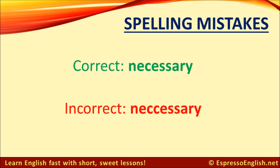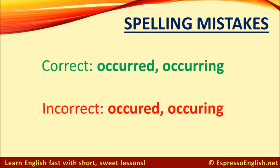Let's look at the word 'necessary' — we only need one C and two S's in the word 'necessary.' But in the words 'occurred' and 'occurring,' we need two C's and two R's. The base form 'occur' has two C's and just one R at the end, but when we add the -ED ending to make the past tense, or the -ING ending to make it continuous, we need to double the R. So we get 'occurred' and 'occurring' with two C's and two R's.